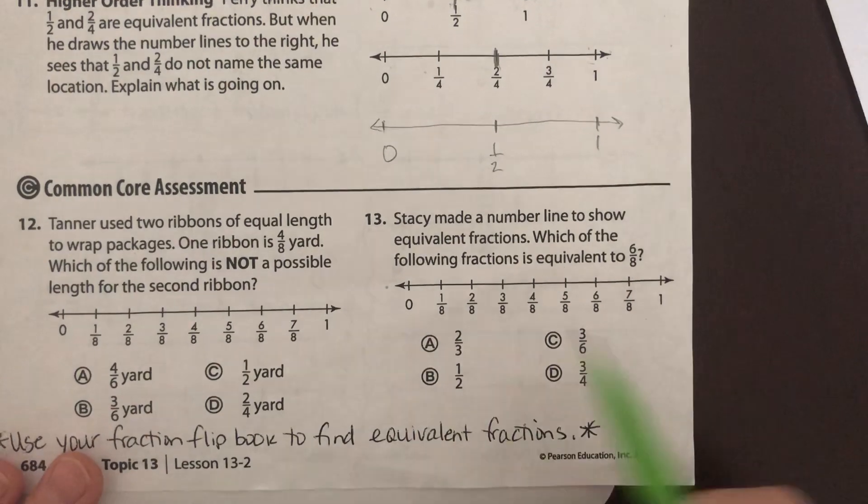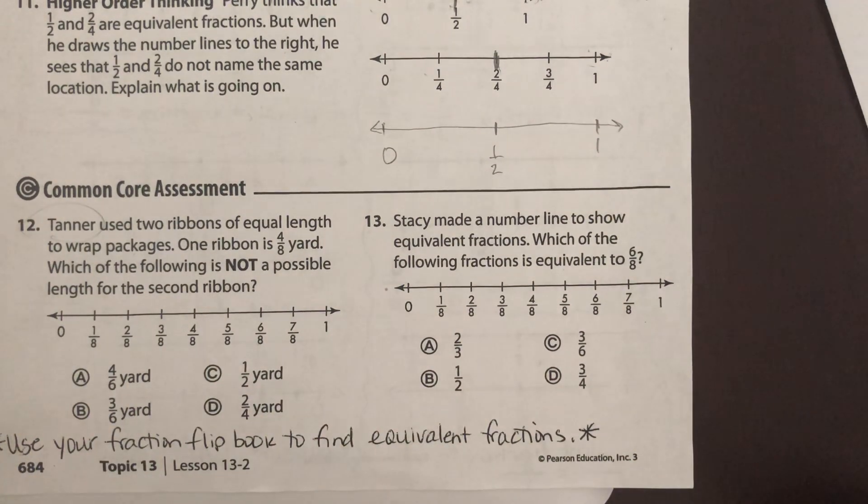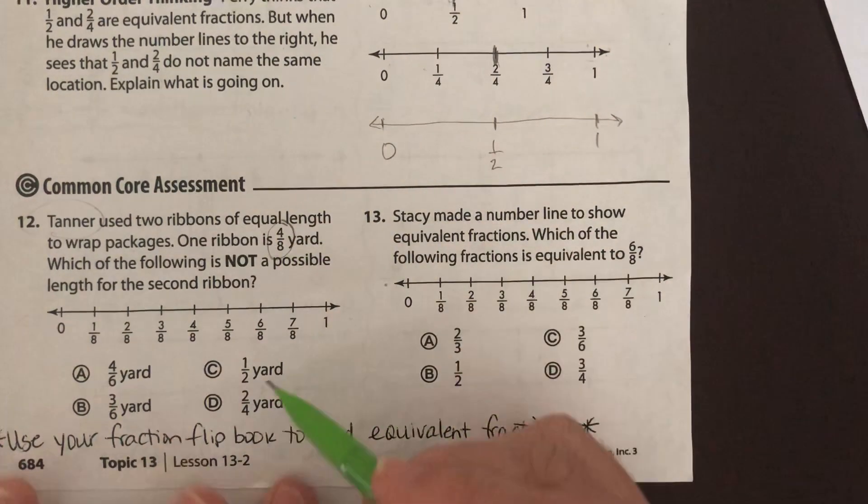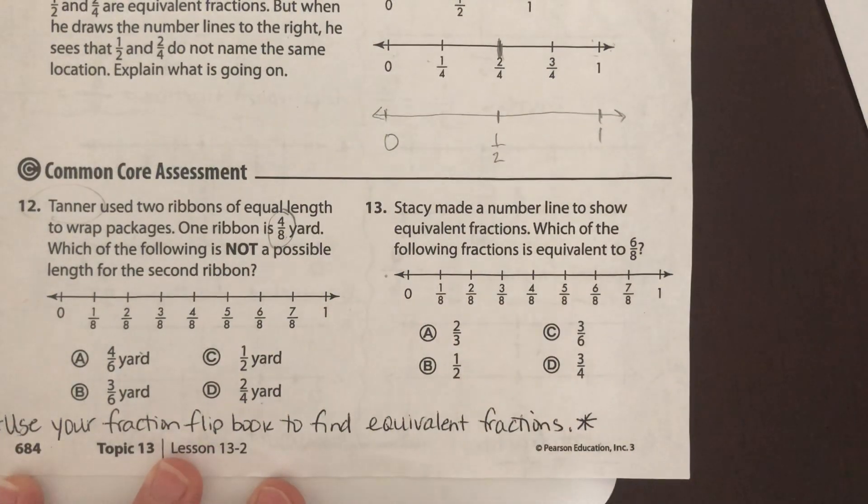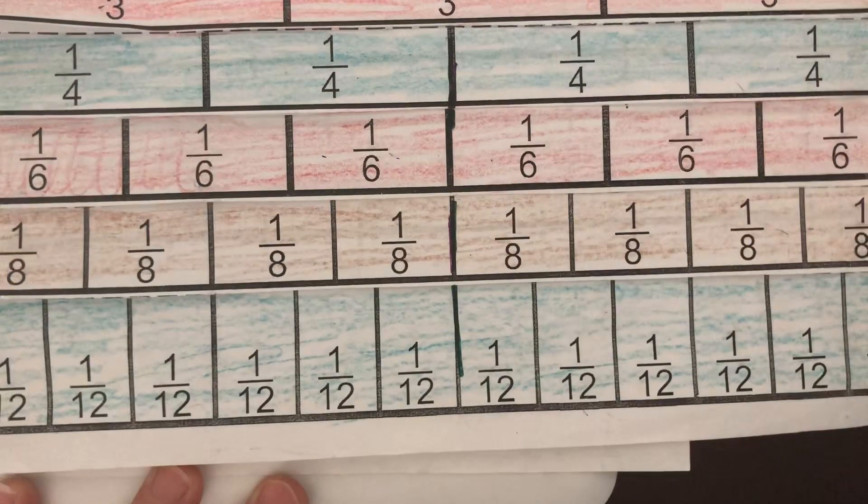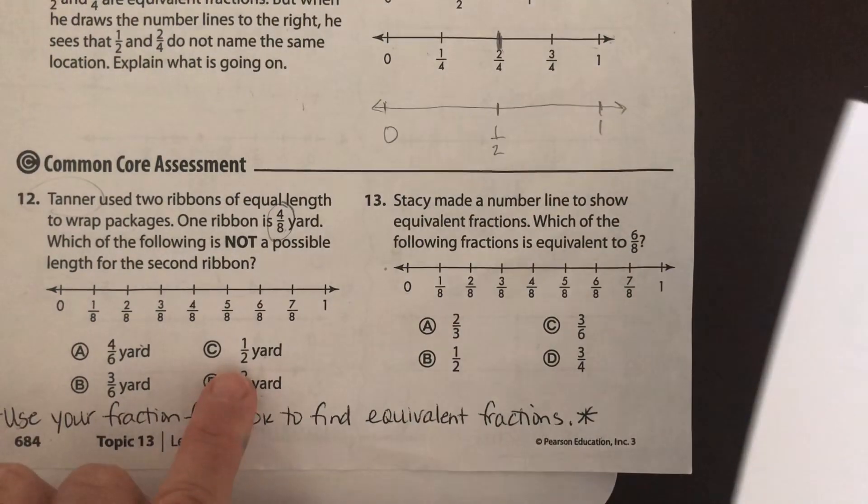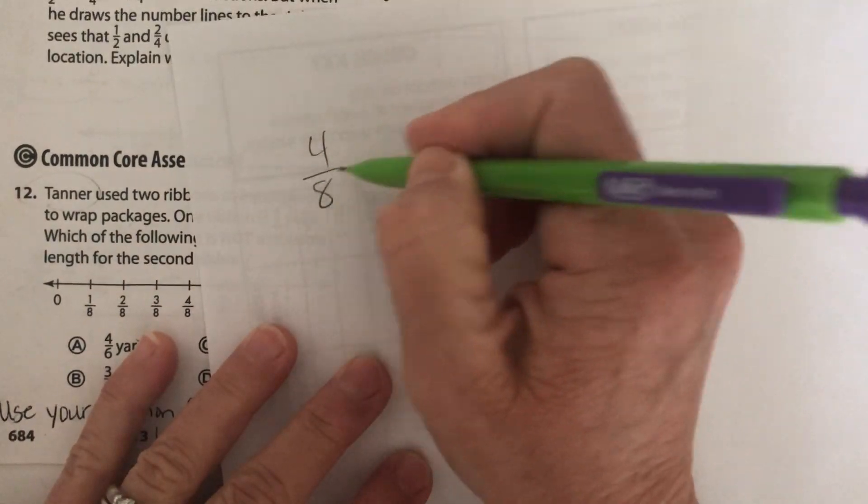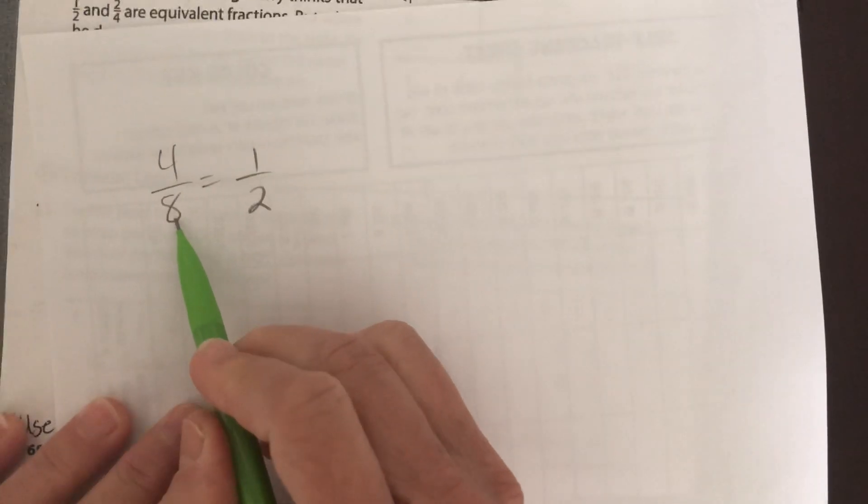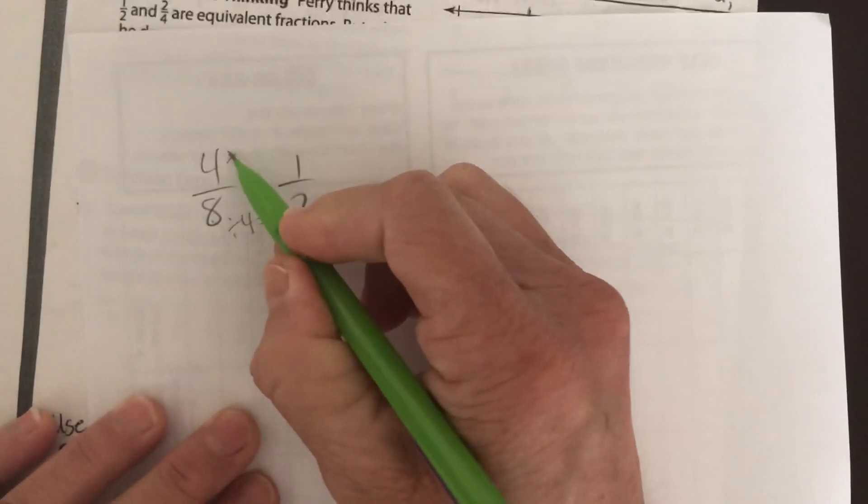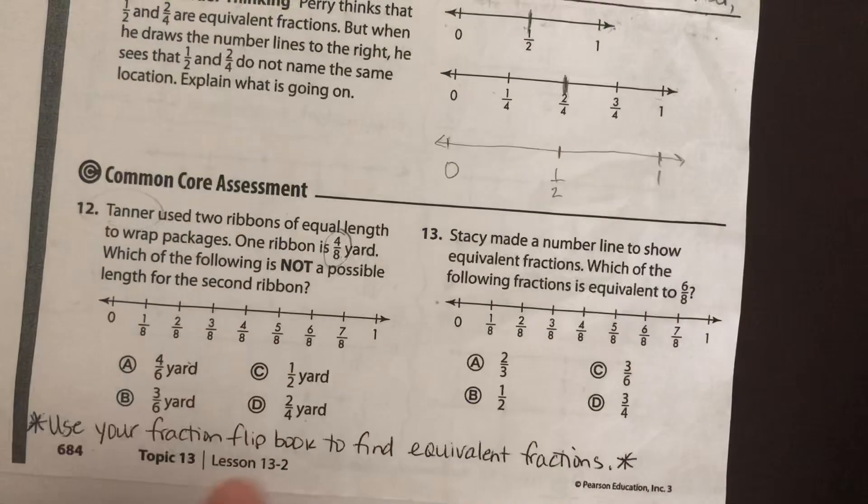Okay, so you can explain that. All right, Tanner used two ribbons of, oh, Tanner, look at you. Tanner used two ribbons of equal lengths to wrap a package. One ribbon is 4 eighths of a yard and which of the following is not a possible length for the second length? Okay, so we want, they're basically asking us for which one of these is not equivalent to 4 eighths. So again, a couple things you could do. Use your fraction flip book. You could also write it out. Let's look at, we'll start with C. 4 eighths is equal to one half, right? I could do that. What number do I multiply or divide by 8 to get to 2? I divide by 4. 8 divided by 4 is 2 and 4 divided by 4 is 1. So one half is equivalent. We're looking for the one that's not.